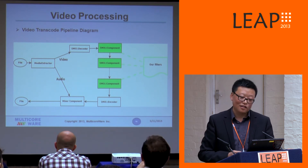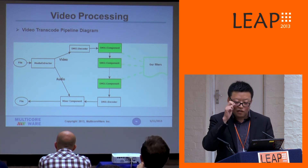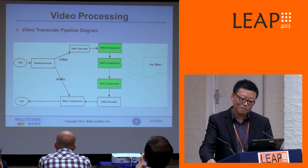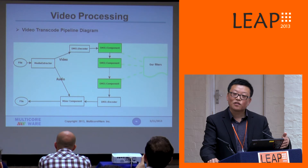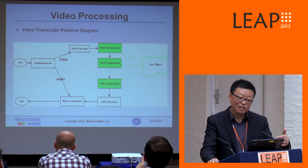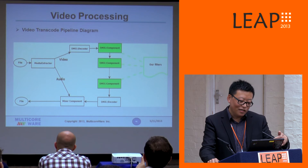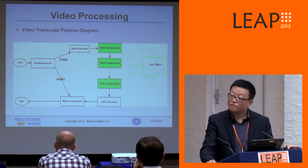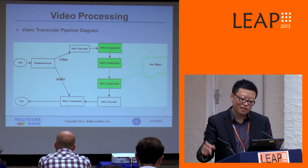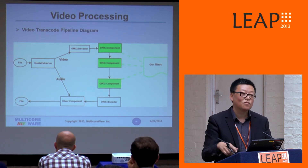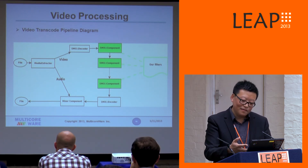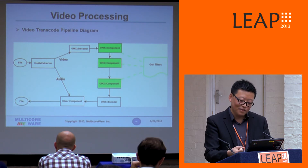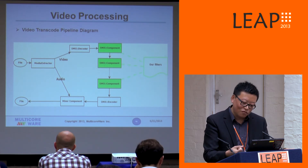Here is an example pipeline diagram showing how we construct the video transcode pipeline. We take video files as input and output video files in different formats. We first call the hardware decoder in a separate component. Then we can apply other filters, either on CPU or GPU, to the pipeline. At the end, we call the hardware encoder to take advantage of the hardware as well.